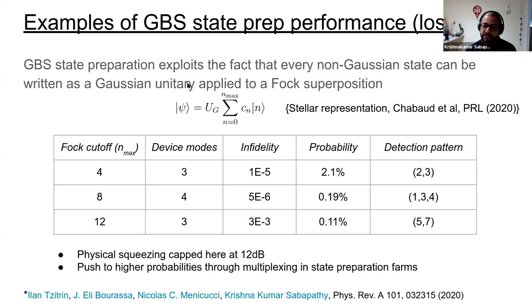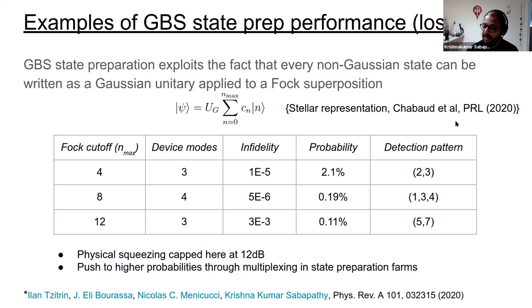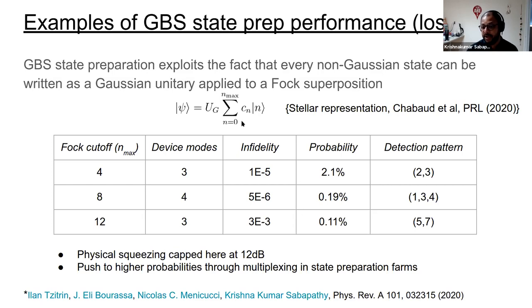This universality comes from the fact that every non-Gaussian state can be written in a stellar representation. I refer you to a recent paper by Chabou et al. — a recent PRL — which goes through the nice details of this stellar representation. What it says is that any non-Gaussian state can be broken down into a Gaussian unitary applied to a Fock superposition. This representation helps us back-work and design the device in terms of target parameters. Factoring out the Gaussian component identifies the core non-Gaussian content, allowing us to work with a much smaller Fock superposition by folding the Gaussian operators into the interferometer and input squeezing values.